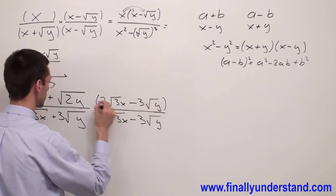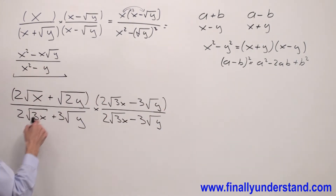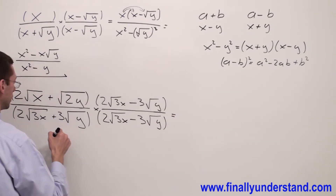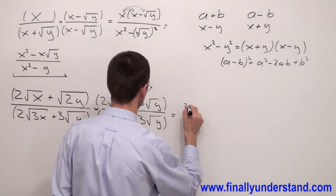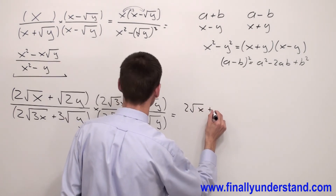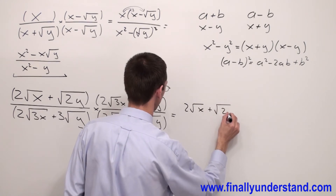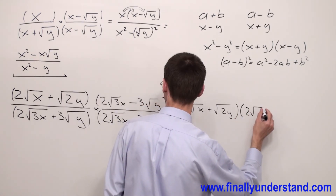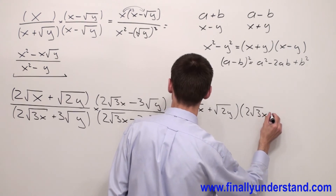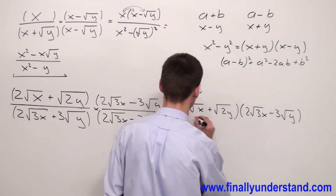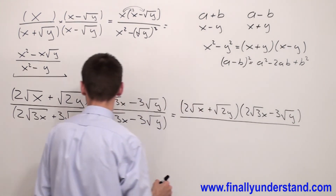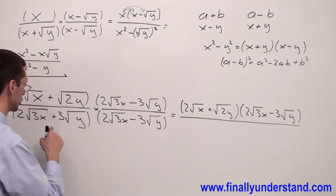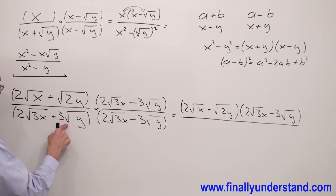Now we are going to perform the multiplication — numerator by numerator and denominator by denominator. In the numerator I'm going to have (2 square root of x plus square root of 2y) times (2 square root of 3x minus 3 square root of y). I'm going to apply the difference of squares rule in order to solve the problem with the radicals in the denominator.